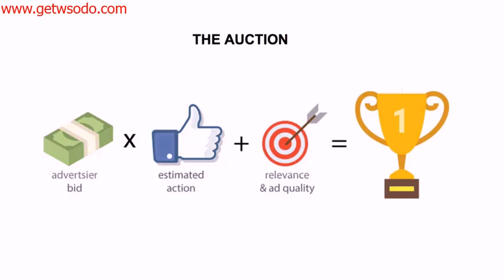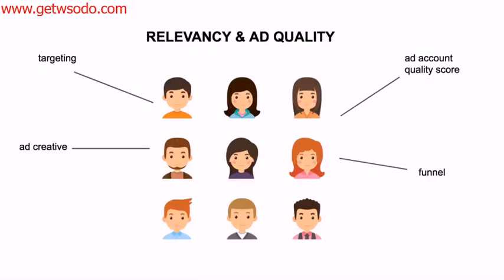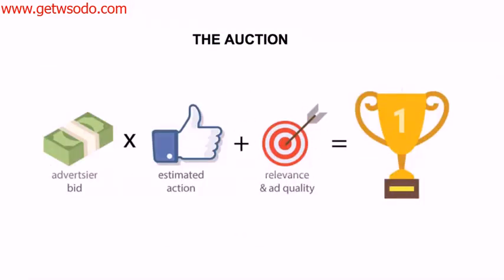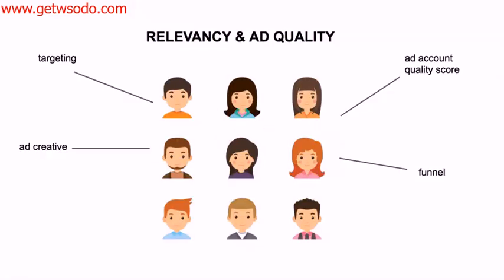That's the basic premise of the auction. Now let's dissect relevancy and ad quality — what actually goes into that? Because we all talk about relevancy and ad quality, but what does it actually include? The things that go into it include your targeting: how relevant is the targeting you're using for what you're trying to sell?